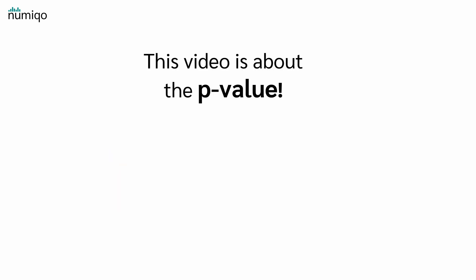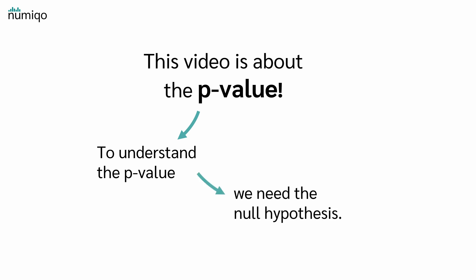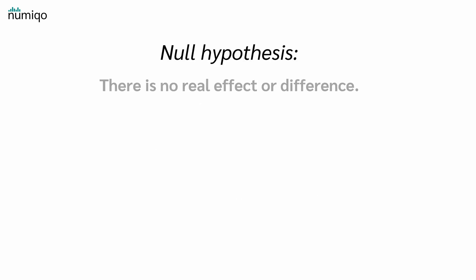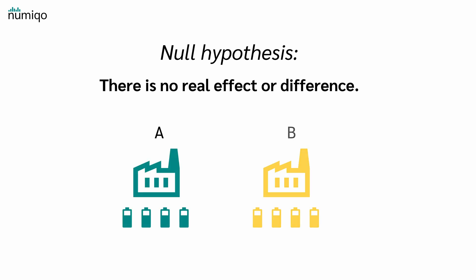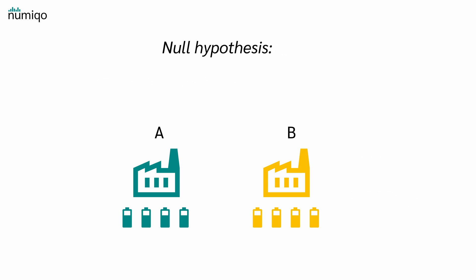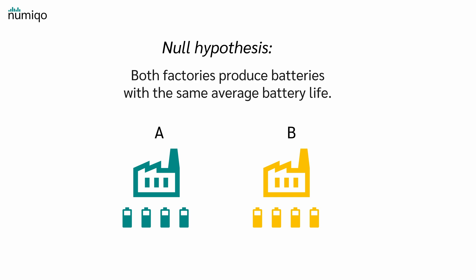This video is about the p-value. In order to understand the p-value, we first need the null hypothesis. But what is the null hypothesis? The null hypothesis states that there is no real effect or difference. In our example, that means Factory A and Factory B produce batteries with the same average battery life. Therefore, our null hypothesis is: both factories produce batteries with the same average battery life.